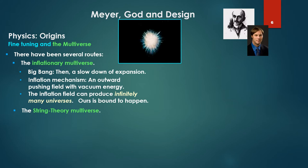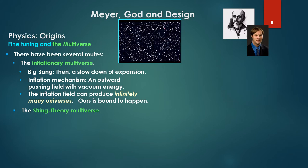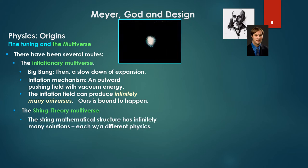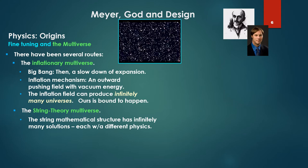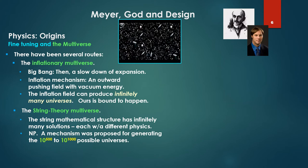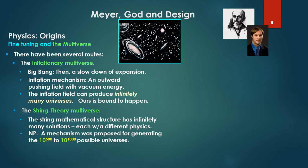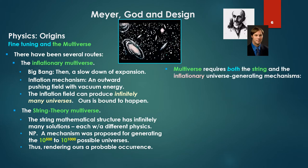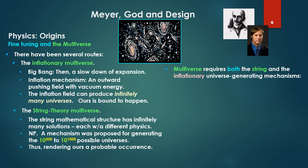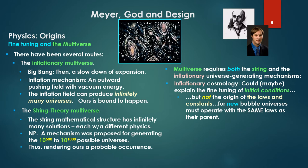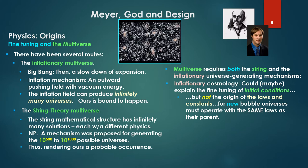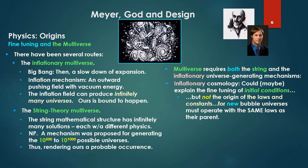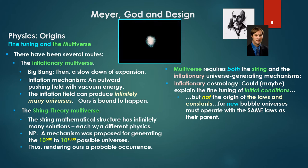Then the string theory multiverse. The string mathematical structure has infinitely many solutions, each with a different physics. No problem—a mechanism was proposed for generating the 10 to the 500 to 10 to the 1000 possible universes. That's a lot. Thus rendering ours a probable occurrence, again just like random mutations. Now, what we see is that the multiverse requires both the string and the inflationary universe generating mechanisms. Inflationary cosmology could maybe explain the fine-tuning of initial conditions, but not the origin of the laws and constants. For new bubble universes that appear, they must operate with the same laws as their parent—they can't arbitrarily change laws.